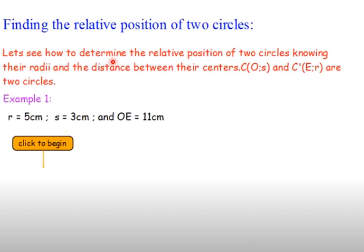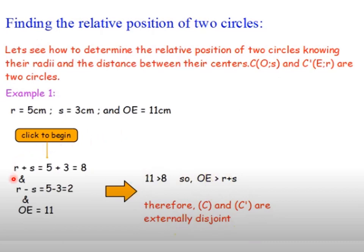In this example, we determine the relative position of two circles given their radii and the distance between centers. Circle C has center O and radius S; circle C′ has center E and radius R. To find the relative position, we calculate R plus S and R minus S, then compare with OE.